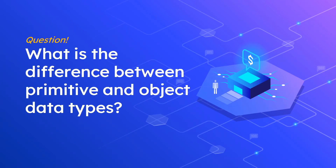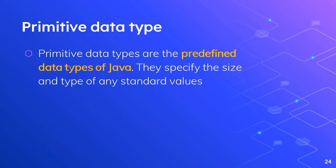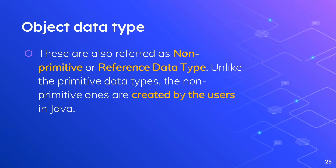What is the difference between primitive and object data types? Primitives are predefined by Java — they specify the size and type of standard values, and are fixed, like int, which has a fixed range it can store. For object data types, also referred to as non-primitive, unlike primitive types, these are created by the users. So we have the power to create object data types. Primitive is predefined by Java; object is created by the user.